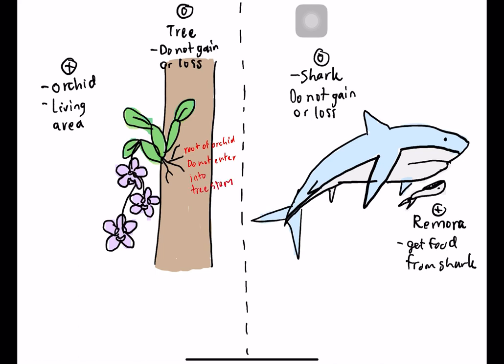The root of the orchid does not enter into the tree stem, so it does not take nutrients from the tree. It just stays on the stem and performs photosynthesis to find its own food. This is quite different from the parasitic plant Rafflesia, which does not have a photosynthetic process. The shark does not gain or lose anything.